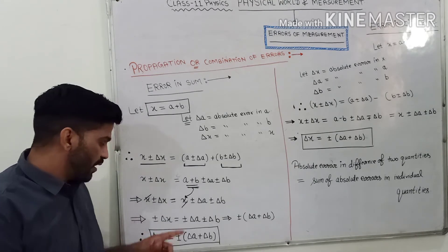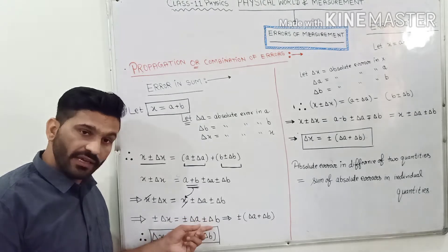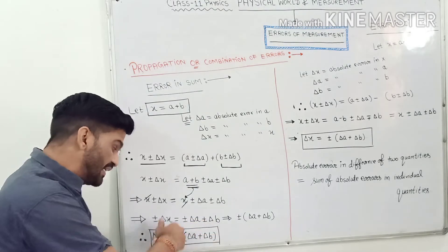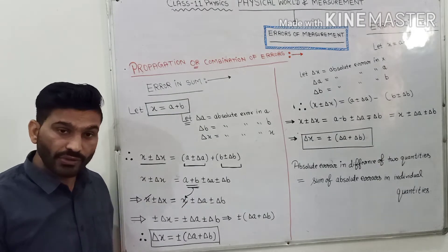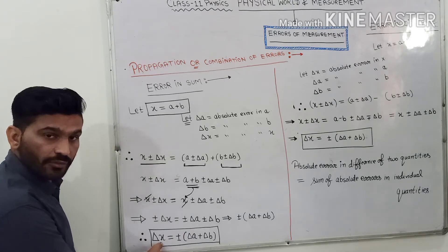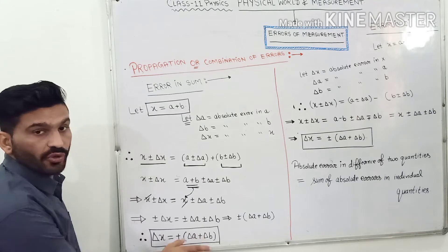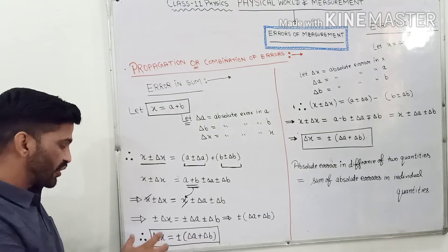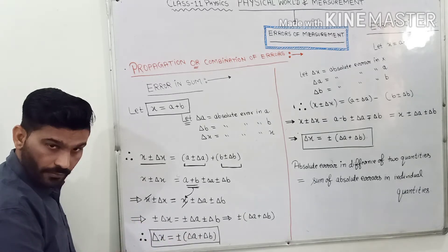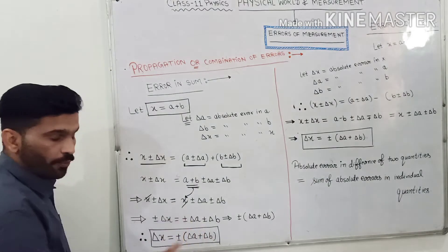Now, considering all combinations — plus delta a plus delta b, minus delta a plus delta b, plus delta a minus delta b, minus delta a minus delta b — all these may be values of delta x. So delta x equals plus minus delta a plus delta b. यानि कि absolute error in x equals absolute error in a plus absolute error in b — that is the sum of absolute errors in individual quantities a and b.